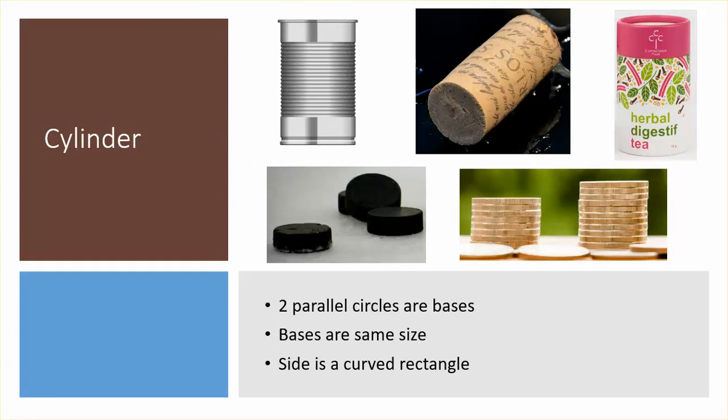When we have two parallel bases that are circles, we have a cylinder. Your bases must be the same size and the side is actually one curved rectangle.